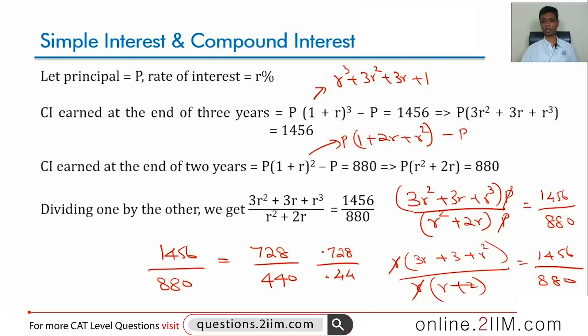They must, think about it. What is 0.728? What is 0.44? What is 1.728? 1.44? 1.728 is nothing but 1.2 whole cube. 1.44 is 1.2 whole square.